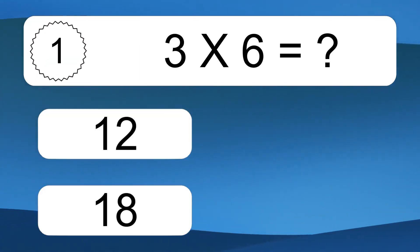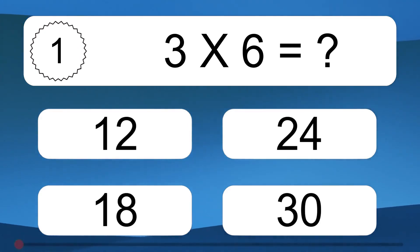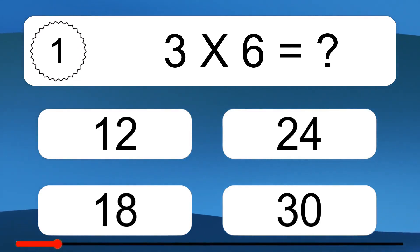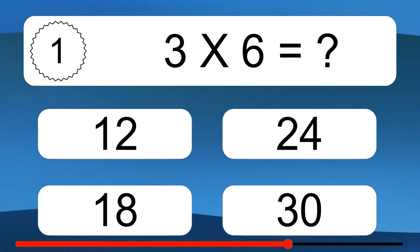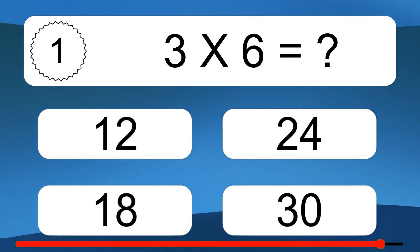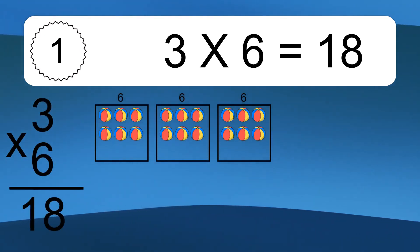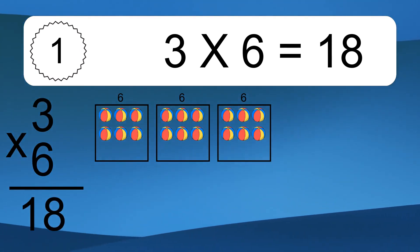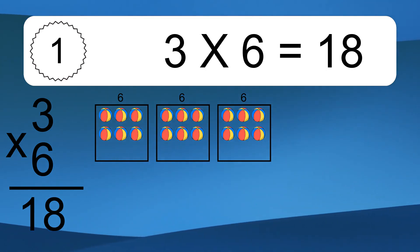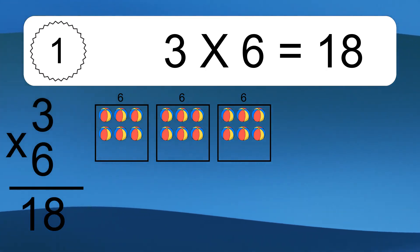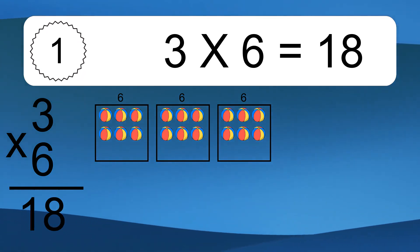3 times 6 equals what? 3 times 6 equals 18. We have 3 boxes, and each box has 6 colorful balls inside. If you count all the balls in all the boxes together, you will have 3 times 6 balls. This equals 18 balls.